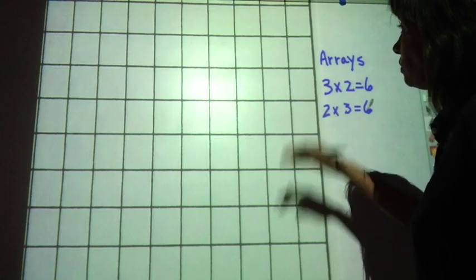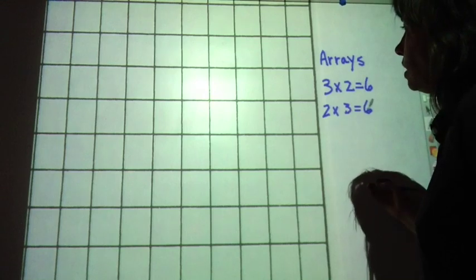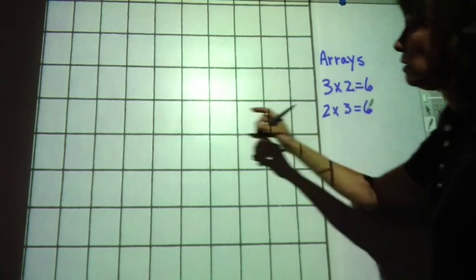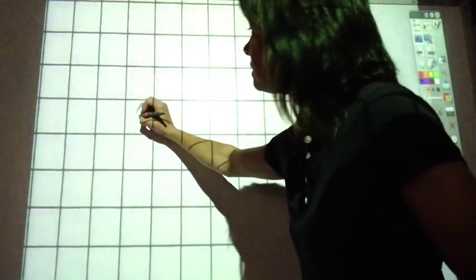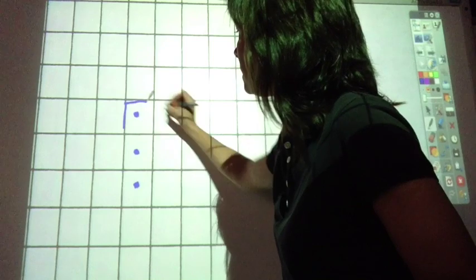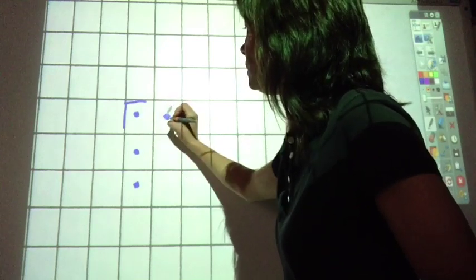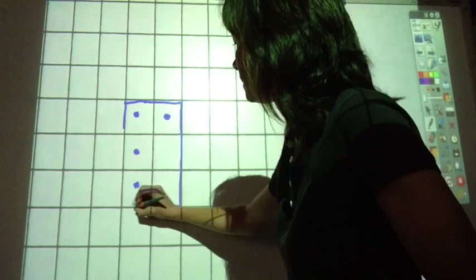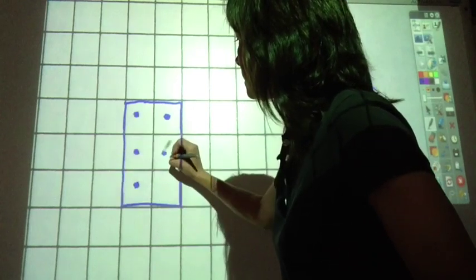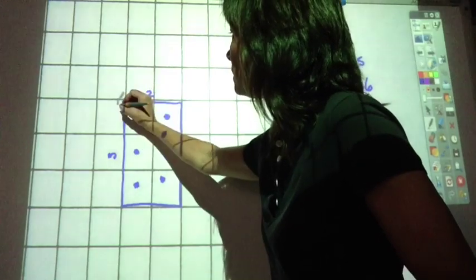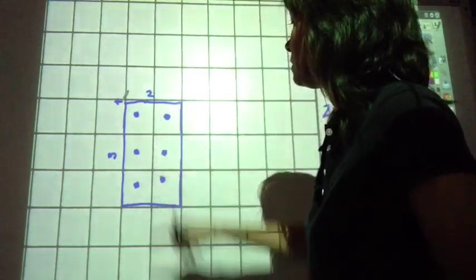When we create an array we will create them down times across. So the array for 3 times 2 equals 6, we've shown as 1, 2, 3 down, 1, 2 across. Create my rectangle. 3, 2, times. 3 times 2 equals 6.